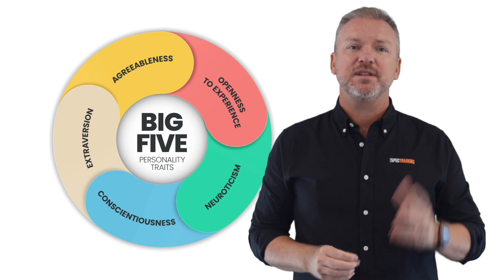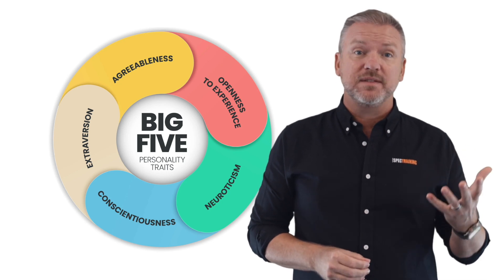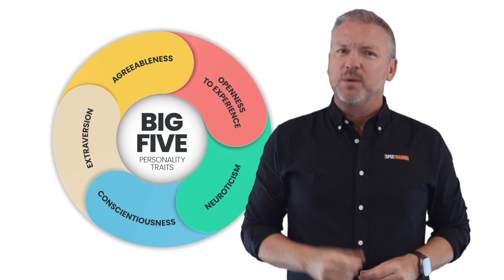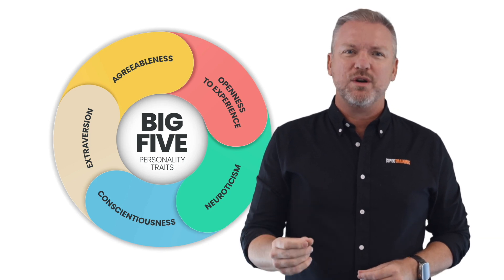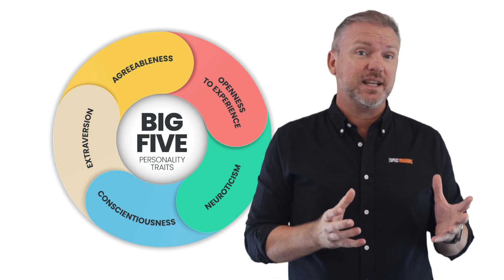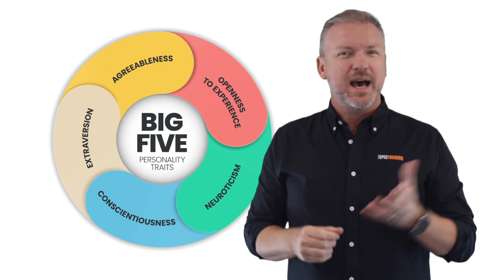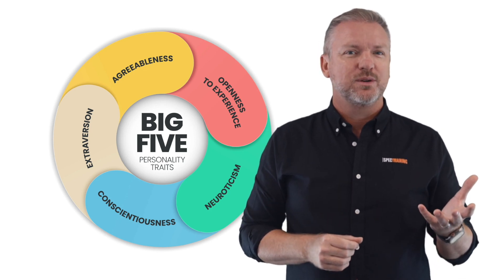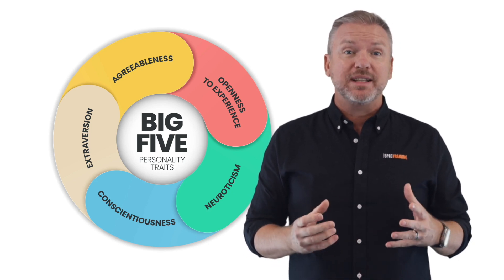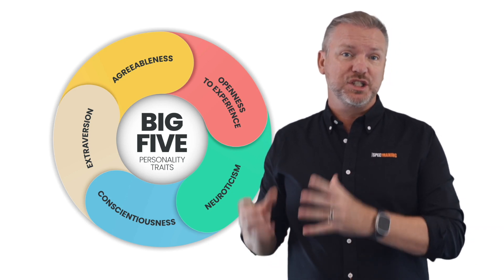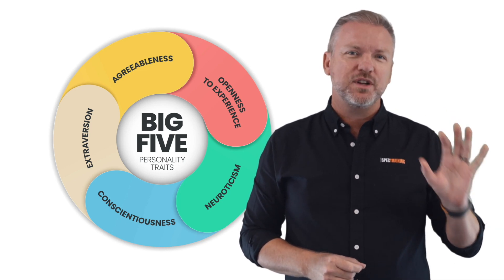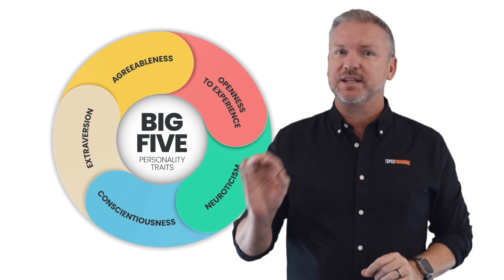It covers openness to experience — are you inventive and curious or more consistent and cautious? Next is conscientiousness — would you call yourself efficient and organized, or extravagant and careless? Then there's extroversion — are you outgoing and energetic, or solitary and reserved? Are you energized by groups or does that experience drain you? Then there's agreeableness — are you more friendly and compassionate, or critical and judgmental? And lastly, there's neuroticism — do you consider yourself more sensitive and nervous, or more resilient and confident?